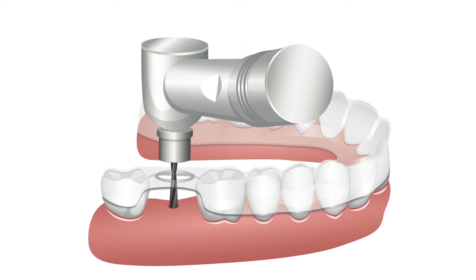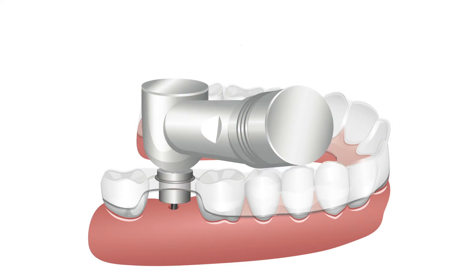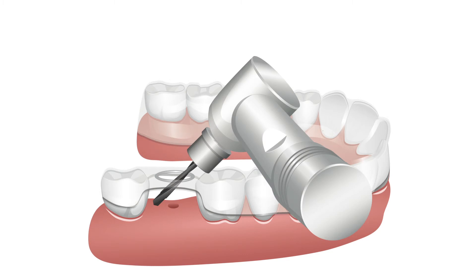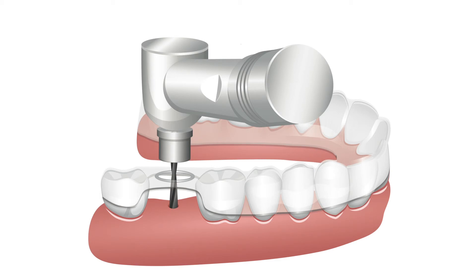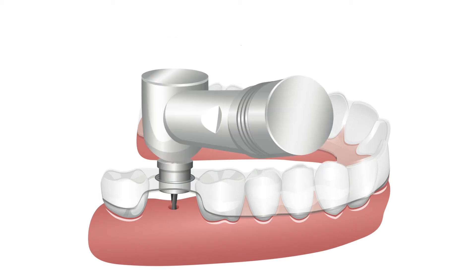With full view and access to the surgical site, continue your normal drill sequence, drilling to depth until each drill stop seats on top of the guide. For posterior sites, insert the drill through the guide hole at an angle, rotate it until the tip is in the existing hole, and drill to depth.